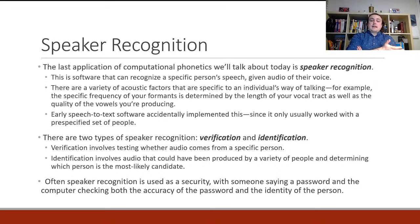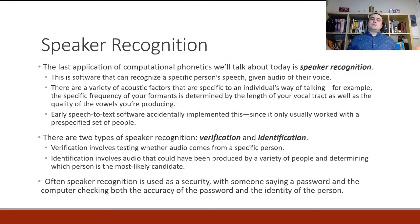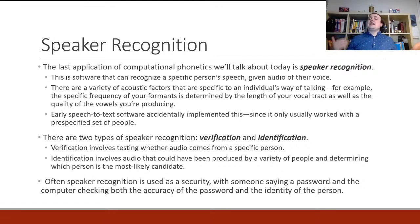There are two types of speaker recognition software: verification and identification. Verification involves testing whether audio comes from a specific person — for example, checking if someone unlocking their phone with their voice is really that person. Identification takes audio and has a list of people it could belong to, saying 'given this audio, do you think it's Taylor, Alex, or Sam?' Often speaker recognition is used as a security measure — someone says a password and the computer checks both the accuracy of the password via speech-to-text and the identity of the speaker.